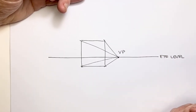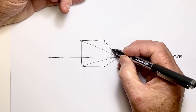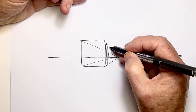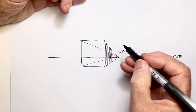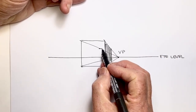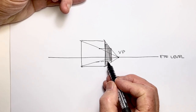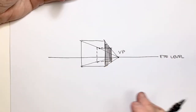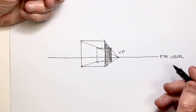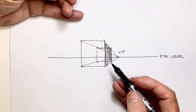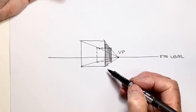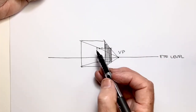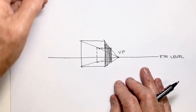That point is called the vanishing point, and it's always on the eye level line. The important thing is to recognize that we can actually see our object three-dimensionally, even though in real life we would only see this face and this side. In fact, the perspective is working on the parts that we can't see.